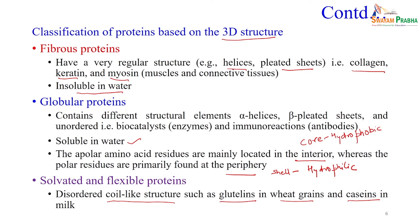These are the three categories of proteins classified based on 3D structure: fibrous, globular, and solvated. We will mostly deal with globular proteins because they are the major component of body fluid.